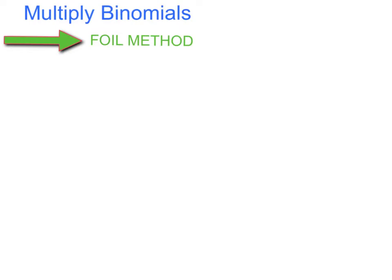Now we're going to do the exact same concept but use a different method — this is the FOIL method. This is the method I would like all of you to eventually be able to do, but I understand that when you first start out the box method really helps organize your work. I want you to eventually get to the FOIL method. FOIL uses the letters F, O, I, and L to tell you the order in which you multiply your terms together, and it stands for: First, Outside, Inside, Last.